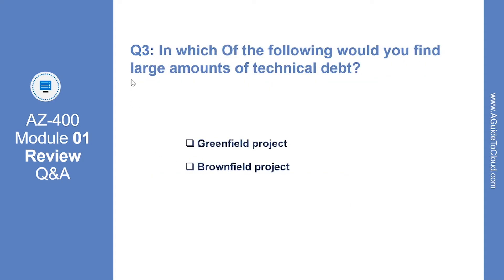Let's look at question number three. In which of the following would you find a large amount of technical debt? The right answer is brownfield project. A brownfield project comes with the baggage of existing code bases, existing teams, and often a great amount of technical debt. They can still be the ideal project for DevOps transformations.